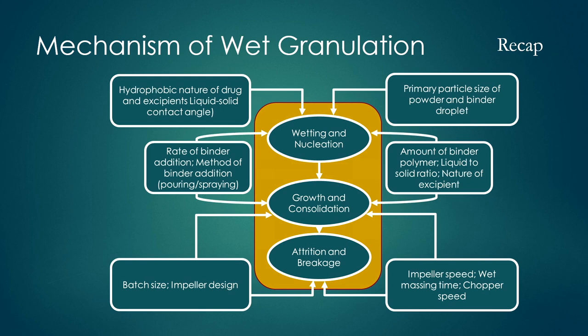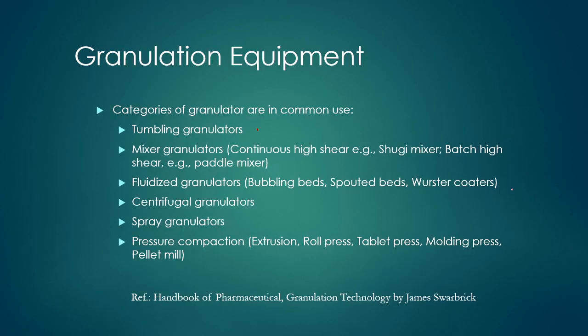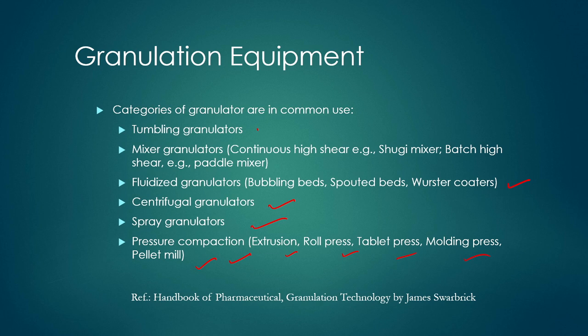Whenever we are going to make granules, there should be certain equipment on which granules will be made. There are several different categories of granulation equipment. The most common ones are: tumbling granulators, mixer granulators, fluidized bed granulators, centrifugal granulators, spray granulators, and compaction machines such as extrusion, roll press, tablet press, molding press, and pellet mill — all used for the granulation process.